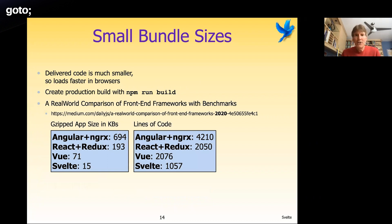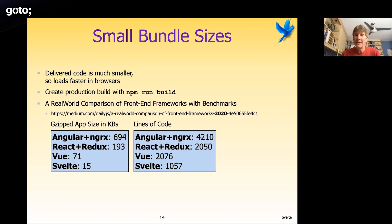Svelte produces really small bundle sizes, and there's a URL showing benchmarks comparing gzip sizes across different frameworks. The differences are quite dramatic, and this comparison shows all frameworks implementing the same web application.